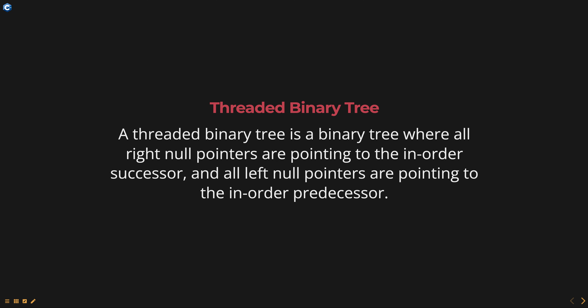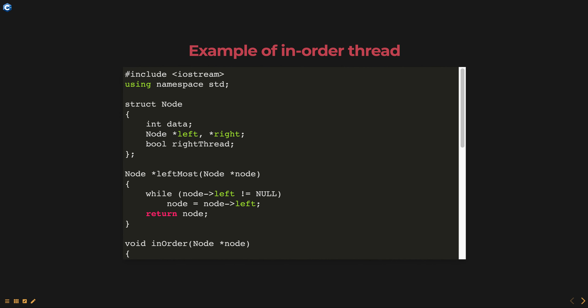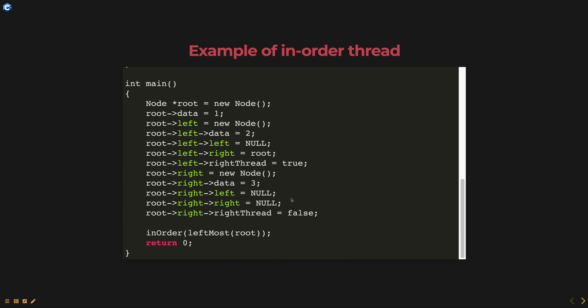Here is a simple example of an in-order threaded binary tree in C++. This code outputs 2, 1, and 3, which is the in-order traversal of the threaded binary tree.